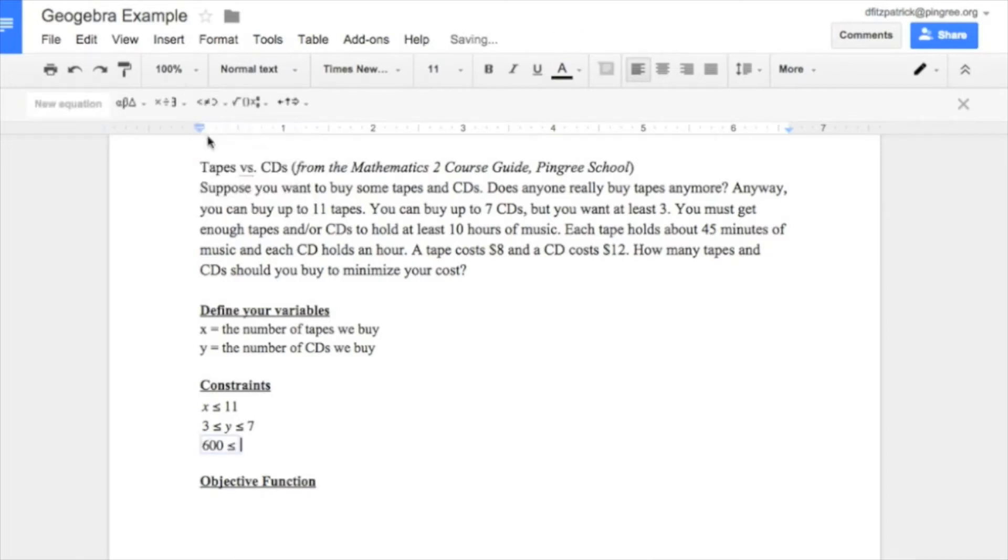will be less than or equal to, and we're in minutes, so 45 times the number of tapes, x plus 60 minutes times the number of CDs. So 60 times the number of CDs. So here are our three constraints.